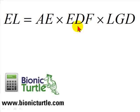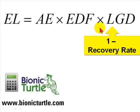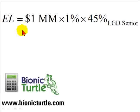The three components are adjusted exposure, expected default frequency — that's also known as probability of default — and finally loss given default, which we'll look at now. Loss given default is equal to one minus the recovery rate. The idea is that when the obligor defaults on a bond or loan obligation, we expect to recover at least something more than zero, and that recovery is factored into the formula for expected loss.